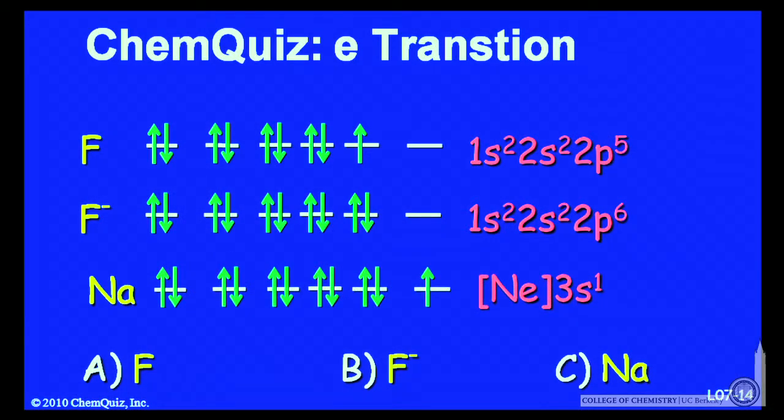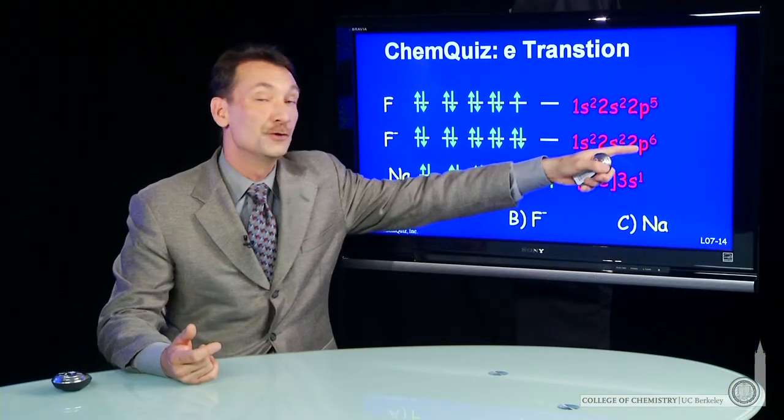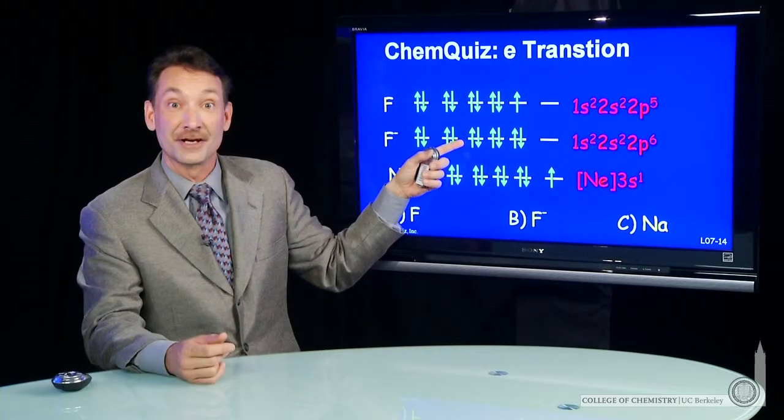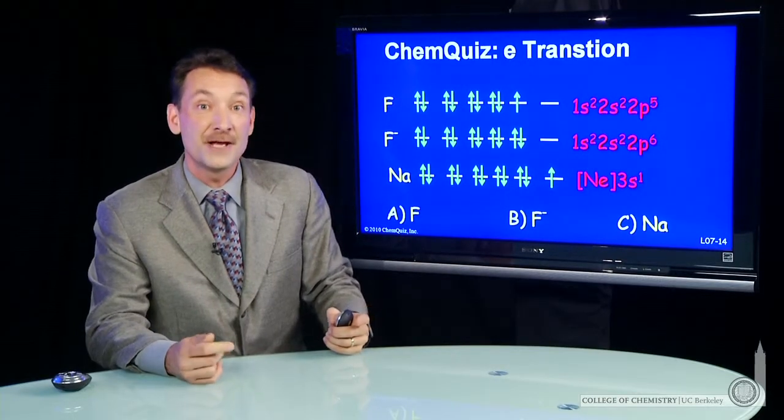Sodium has all the electrons that neon has, so 1s²2s²2p⁶. Notice fluorine minus and neon have the same electronic configuration. Plus it has an electron in the 3s orbital.